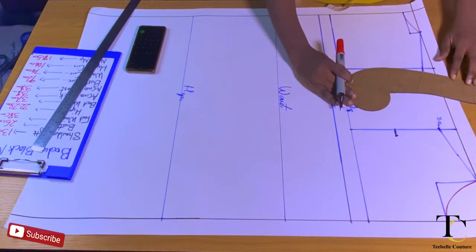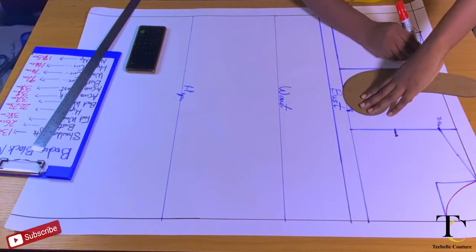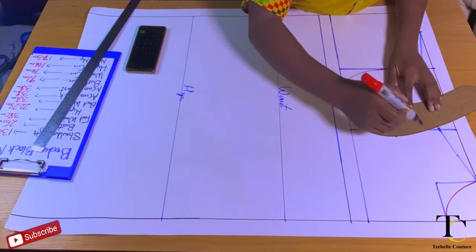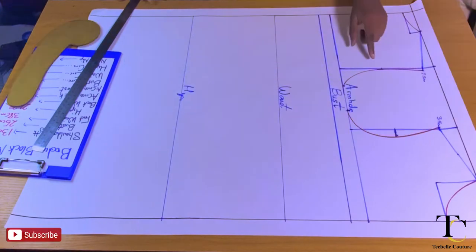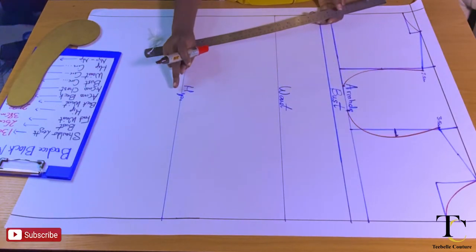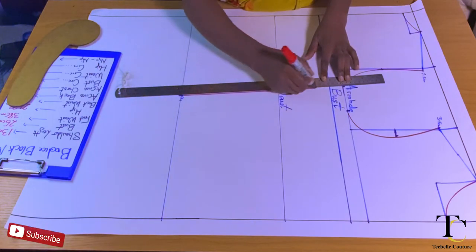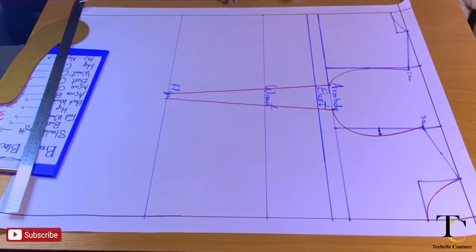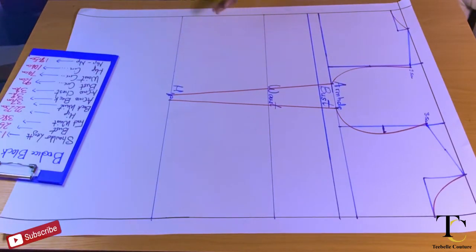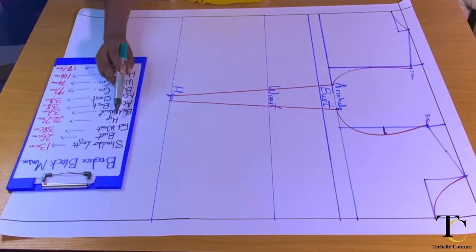After marking along the hip line, I will take my armhole curve to connect my armhole line from my shoulder point to the midpoint to my bust measurement divided by 4, connecting both the front and back. Then go ahead to connect from my armhole line through to my hip line with a straight ruler. Now I can say I have a flat basic bodice, and next I'm going to show you how to shape and true my pattern waist to give it a fit.